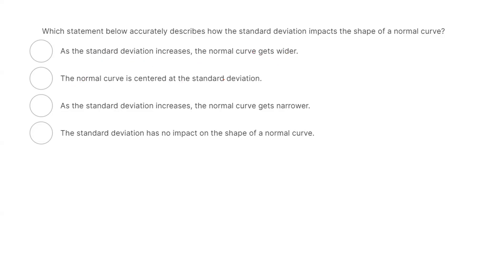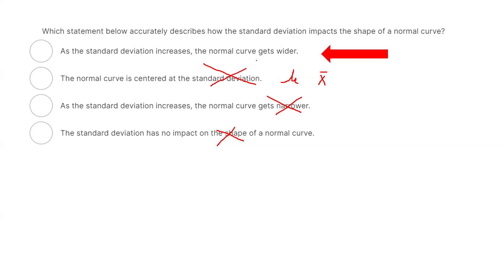Option two says the normal curve is centered at the standard deviation. No, this is not correct — it is centered at the mean, either mu or x-bar. Option three says as the standard deviation increases the normal curve gets narrower. No, that's not correct. As long as you have more variability, the graph gets wider, not narrower. And finally, option four says the standard deviation has no impact on the shape of the normal curve. This is also wrong — variability has an important impact on the shape of the graph.